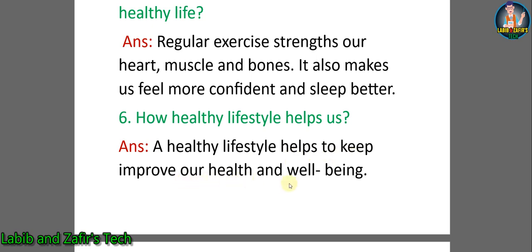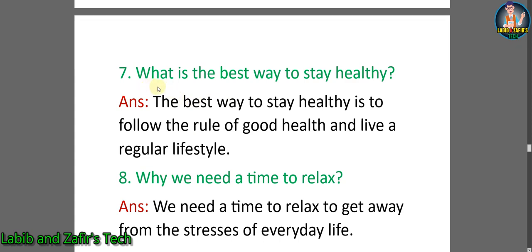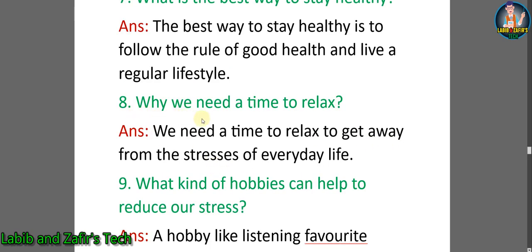Number six: how does a healthy lifestyle help us? Answer: a healthy lifestyle helps to keep and improve our health and well-being. Number seven: what is the best way to stay healthy? Answer: the best way to stay healthy is to follow the rules of good health and live a regular lifestyle. Number eight: why do we need a time to relax? Answer: we need a time to relax to get away from the stresses of everyday life.